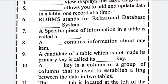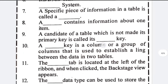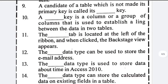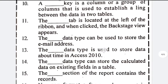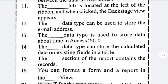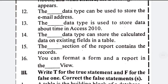A field contains information about one item. A candidate key of a table which is not made its primary key is called alternate key. A key — a column or group of columns used to establish a link between two tables — is a foreign key. The data type used to store email addresses is hyperlink. The data type used to store date and time is date/time. The data type used for calculation is number.